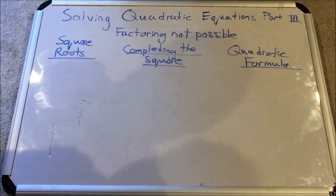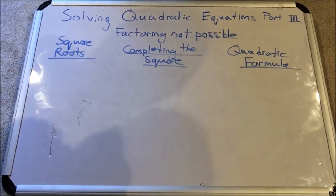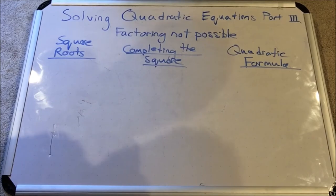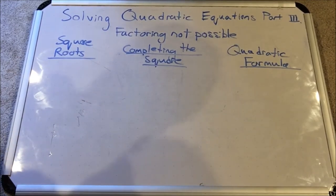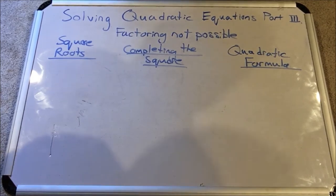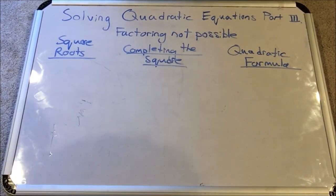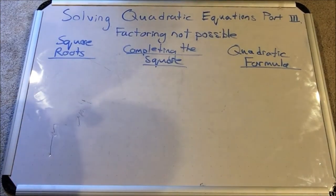All of these, when factoring is not possible, will result in solutions that are irrational. So that means they have a square root in them. The decimal form is an irrational number where the decimal does not repeat and it goes on forever.